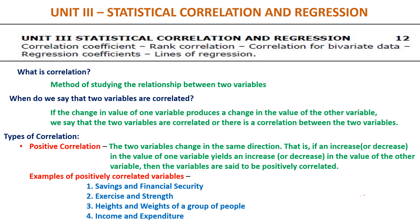With this background, let us begin with our syllabus. As I said, we start with Unit 3. The title of Unit 3 is statistical correlation and regression. The syllabus of this unit covers the concepts of correlation coefficient, rank correlation, correlation for bivariate data, regression coefficients, and lines of regression. We start with what is correlation, then types of correlation, and then the first topic: correlation coefficient.